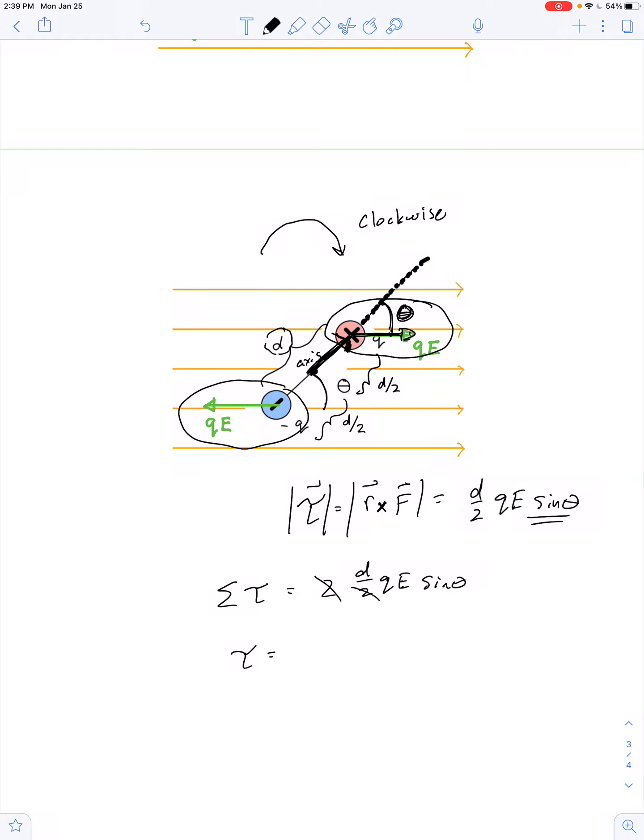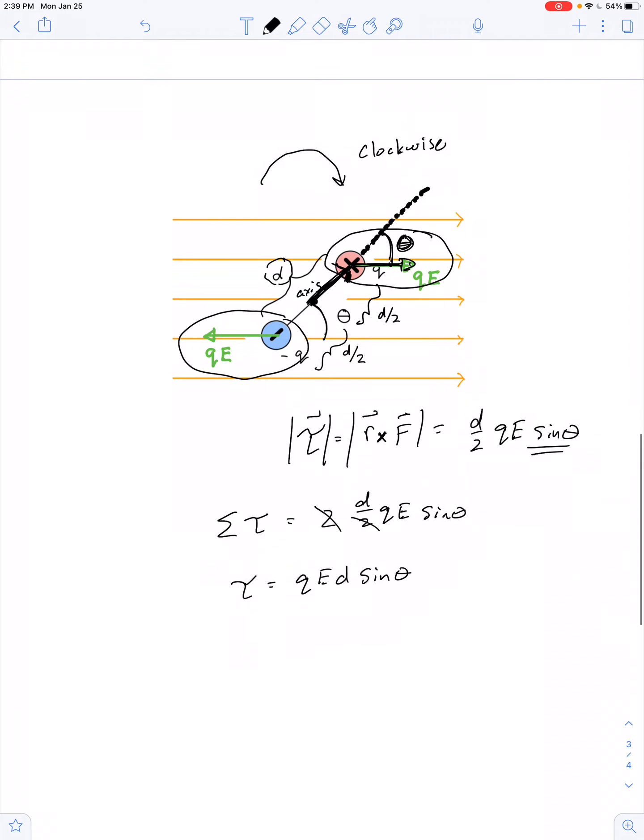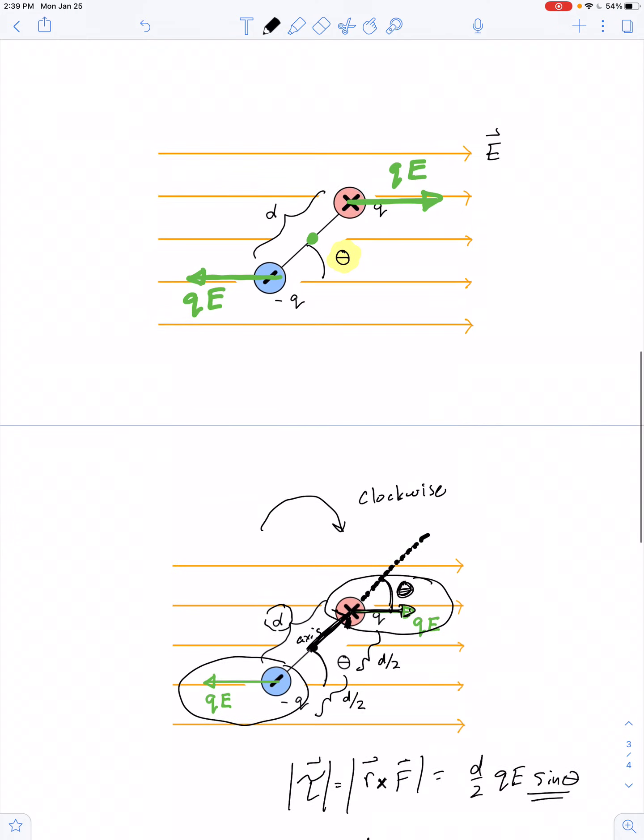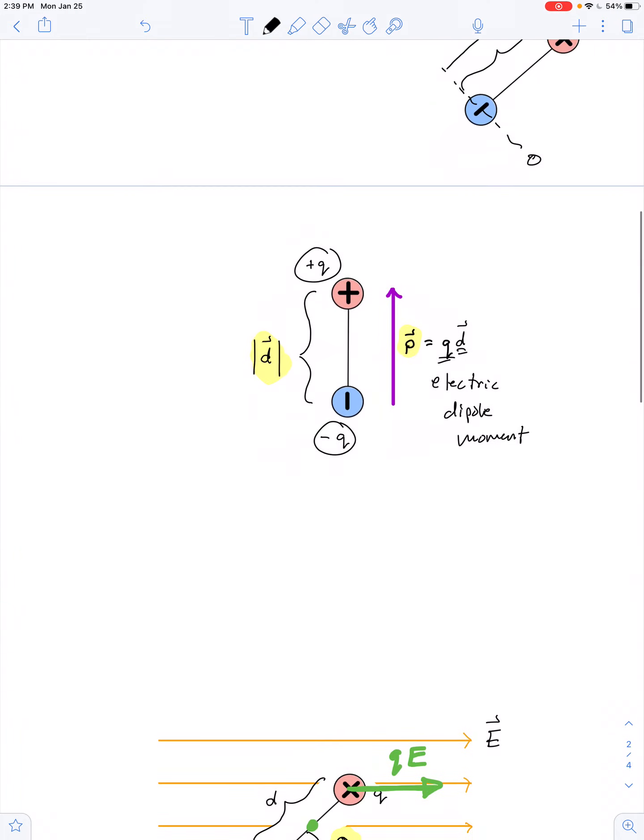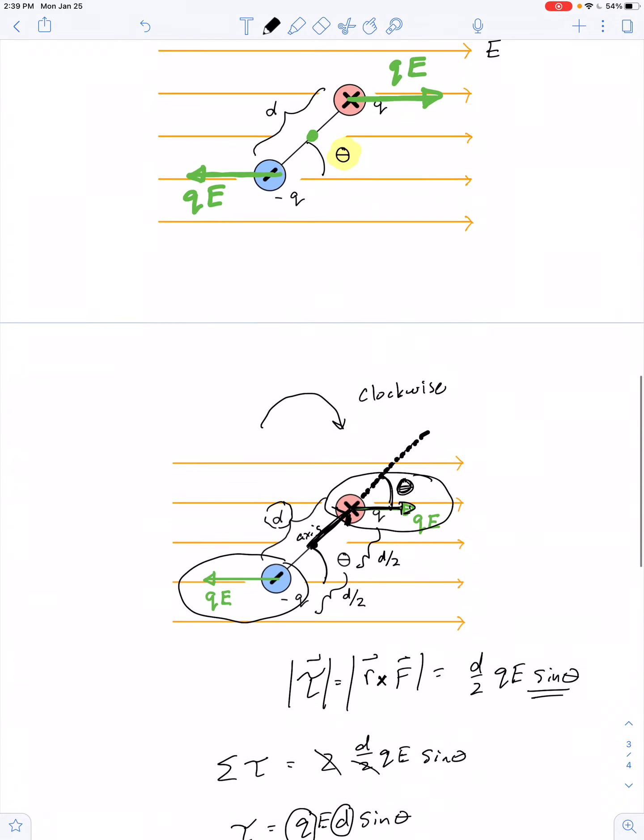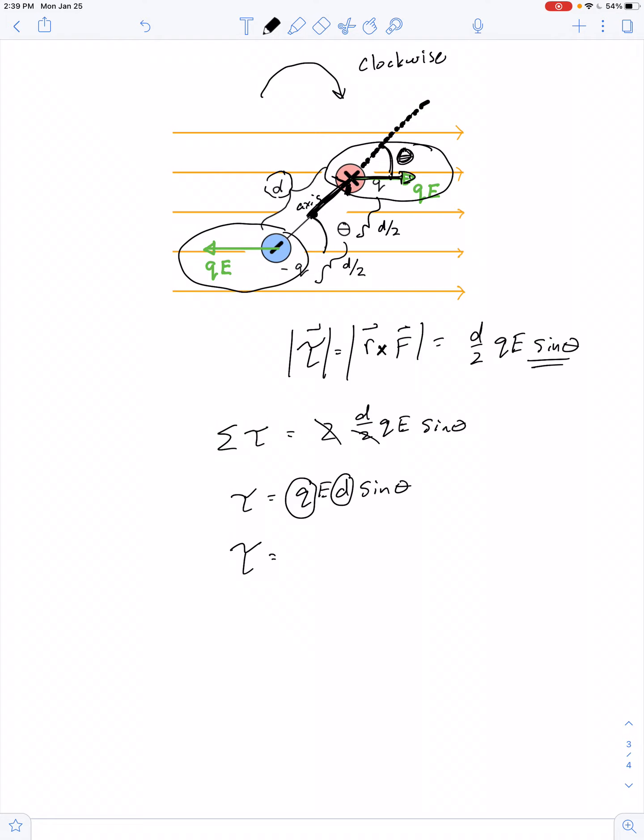And our torque is QED sine theta. However, we see that there's Q and D as part of the product. And we've already defined the electric dipole moment as the scalar Q multiplied by the vector D. The magnitude of our electric dipole moment is QD. So the magnitude of our torque can be rewritten as P E sine theta.